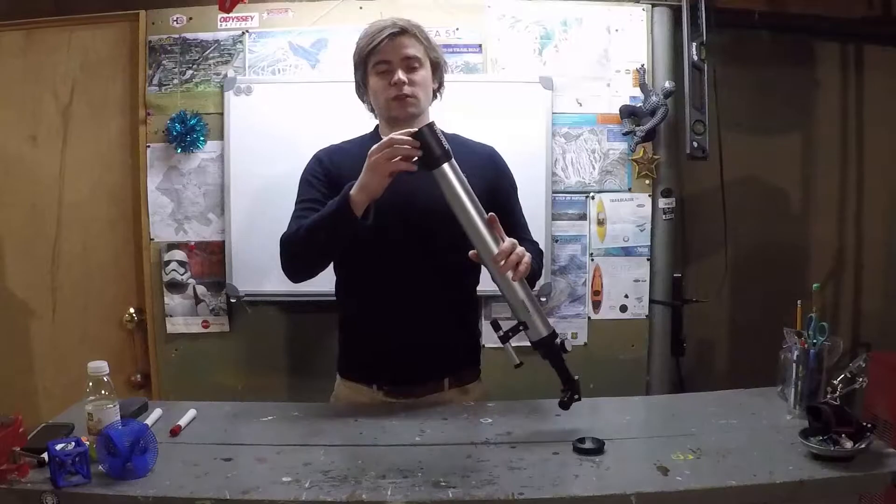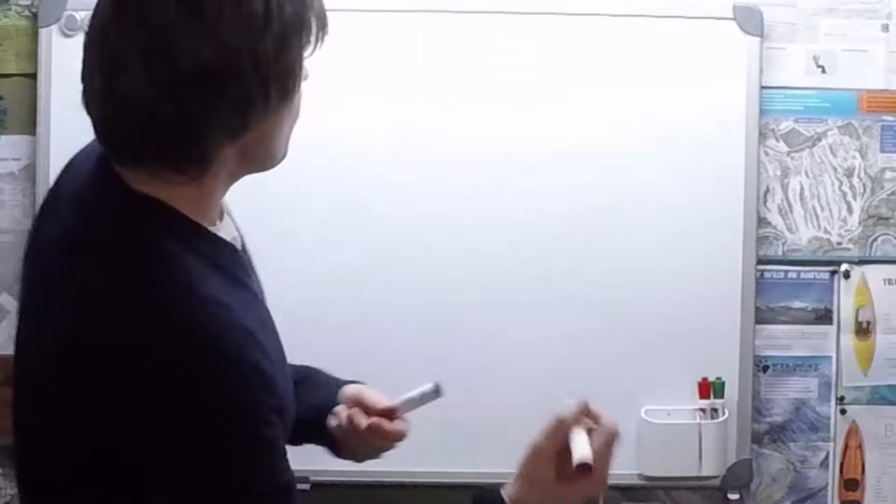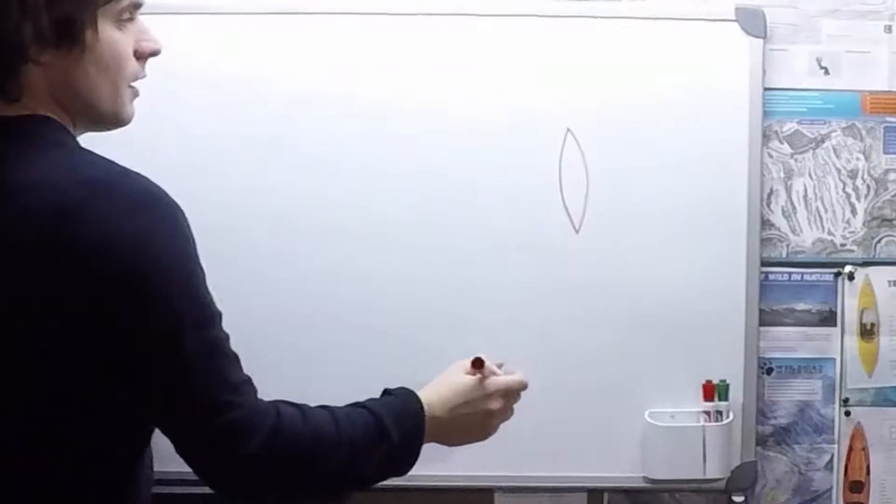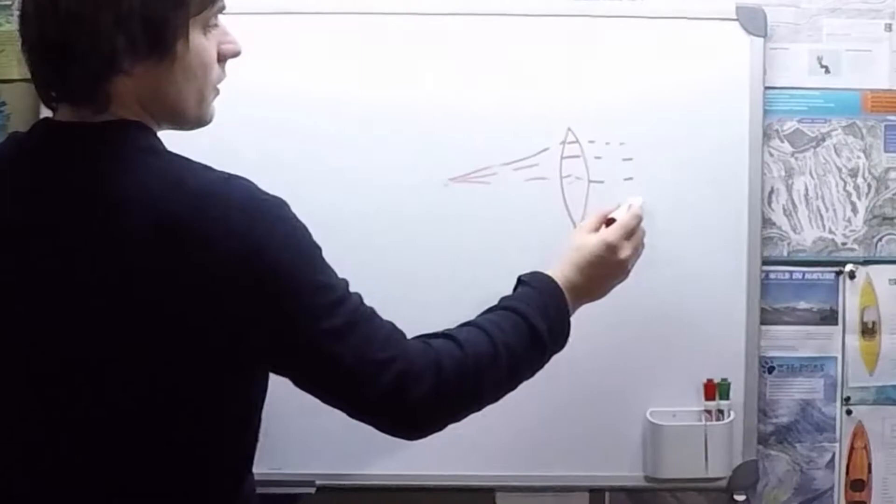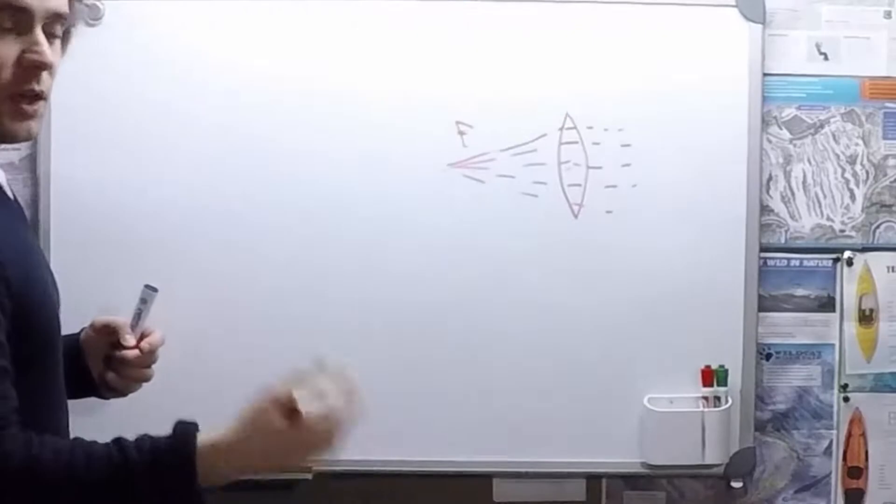First up, in the front of the telescope we have our objective lens. Now the objective lens within a refracting telescope is a convex lens, so it's kind of shaped like that. And a convex lens being a positive lens or a converging lens, it's going to take the incoming light and refract it to its focal point.